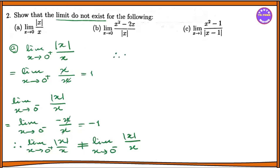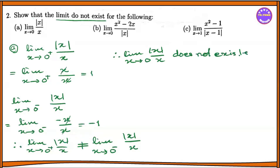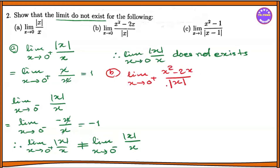Since the right-hand limit of modulus of x divided by x as x tends to 0 equals 1, and the left-hand limit equals minus 1, the two limits are not equal, so the limit does not exist.